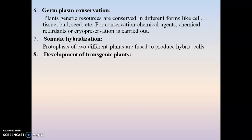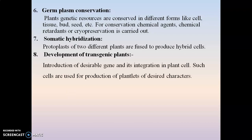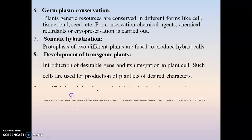The eighth application is the development of transgenic plants. In transgenic plants, a desirable gene is introduced into the plant cell. That plant cell is then integrated, and these integrated cells are cultured by means of plant tissue culture to form plantlets. The plantlets which contain the desirable characters are called transgenic plants. This plant tissue culture technique is also used for the development of transgenic plants.